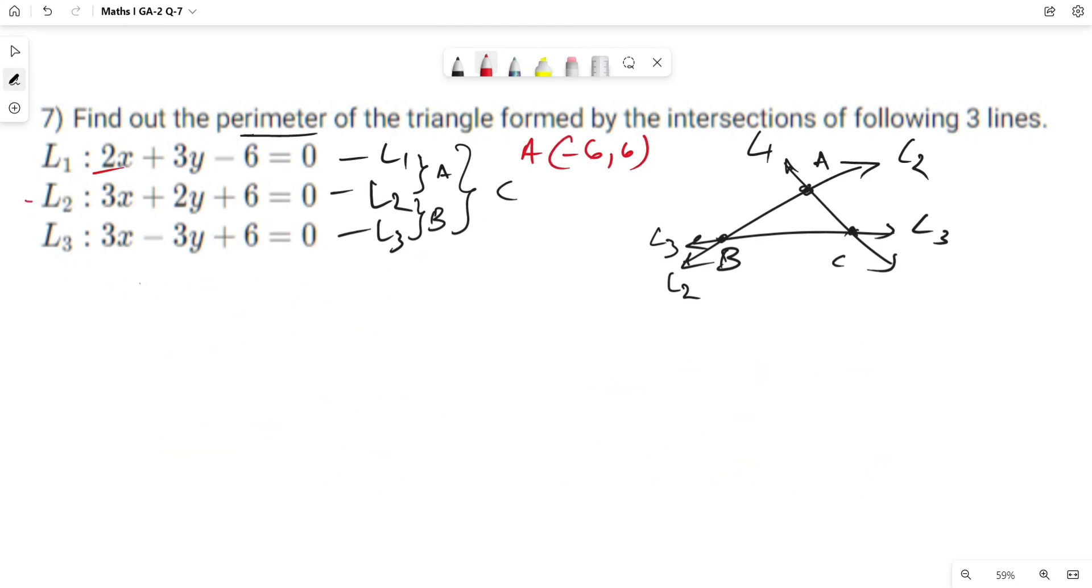Now for point B as the intersection of L2 and L3. 3x plus 2y equals minus 6, and 3x minus 3y equals minus 6. Subtracting the second equation from the first: 2y plus 3y equals 0, so 5y equals 0 and y equals 0.